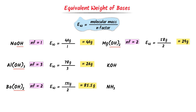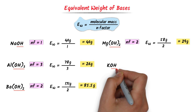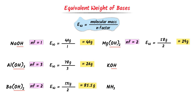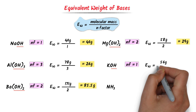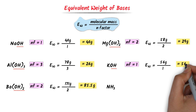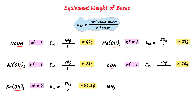In case of potassium hydroxide, there is 1 hydroxide ion, so its N factor is 1. Its equivalent weight is equal to the molecular weight, which is 56 gram, upon 1. I get 56 gram. So the equivalent weight of potassium hydroxide is 56 gram.